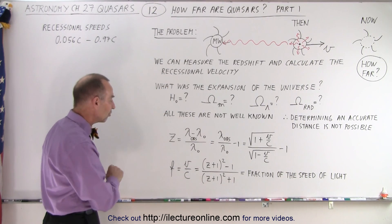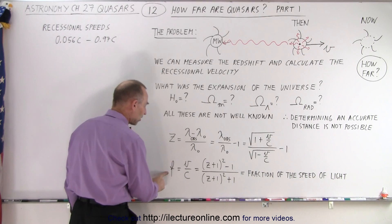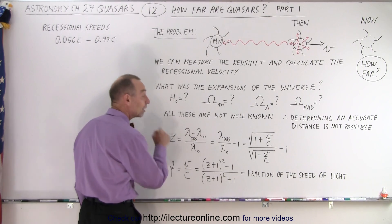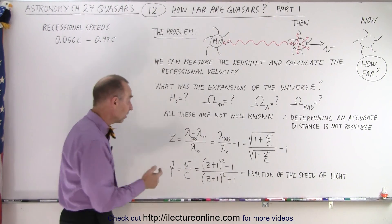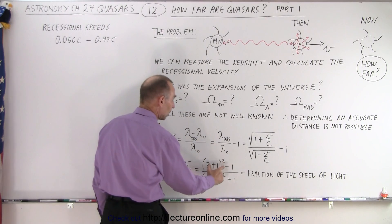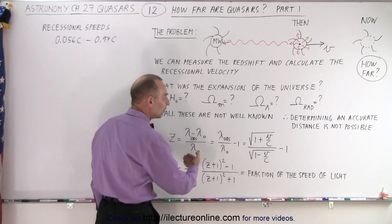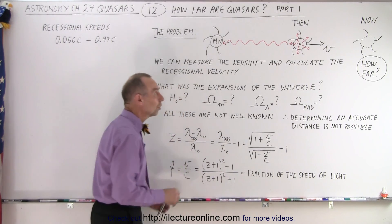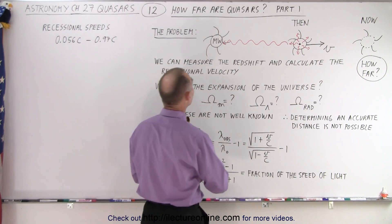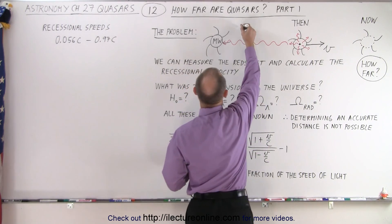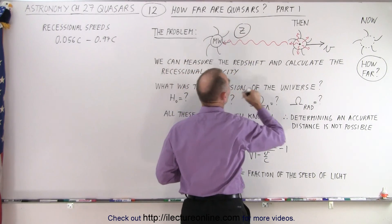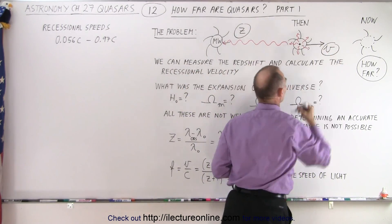Once we know the redshift, we can then calculate the fraction of the velocity of the object relative to the speed of light. That is simply z plus one squared minus one divided by z plus one squared plus one. This will be the fraction of the speed of light. So in other words, we can very easily calculate the redshift, the z as we call it, and we can very easily calculate the recessional velocity.